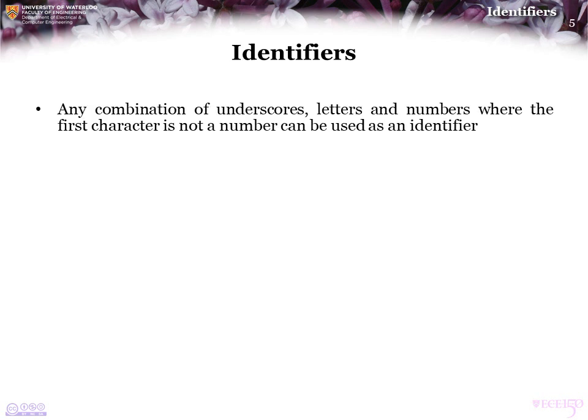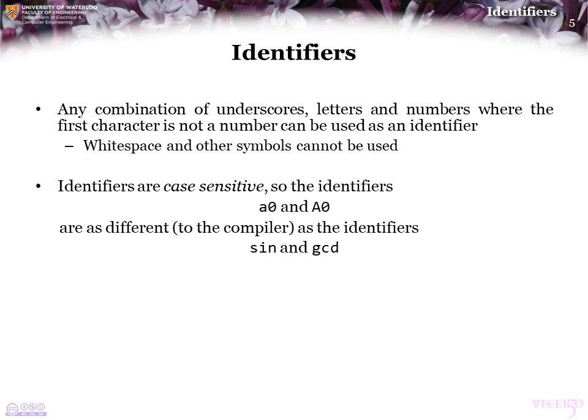An identifier is any combination of underscores, letters, and numbers where the first character is not a number. Whitespace and any other symbol on the keyboard cannot be used. Also, identifiers are case sensitive. For example, the identifiers lowercase a0 and uppercase A0 are as different, as far as the compiler is concerned, as the identifiers sine and gcd are. So be very careful as to what you use.